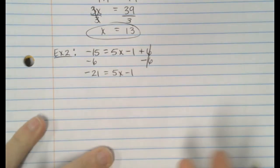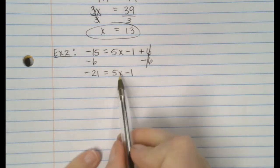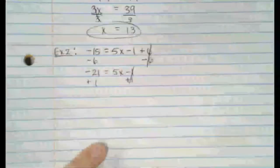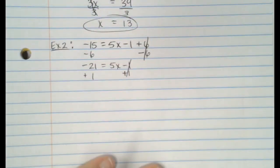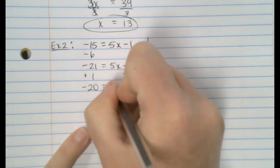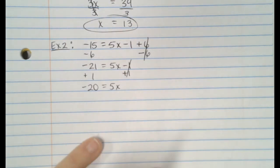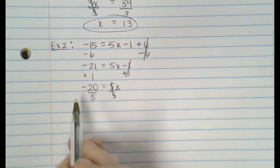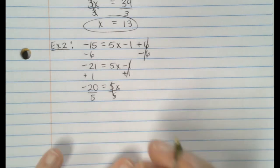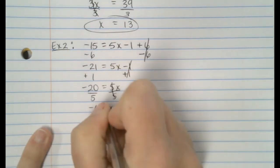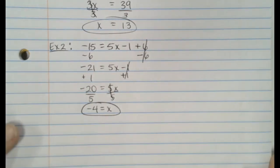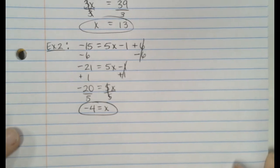And then, again, we're at an easier equation. Do we do the 5 or the 1 next? The 1, we're going to add 1. Negative 21 plus 1 is negative 20. And our last step is to get rid of the 5 by dividing. And make sure you divide negative 20 by 5. Do not forget your negative. It should give you negative 4, I believe.